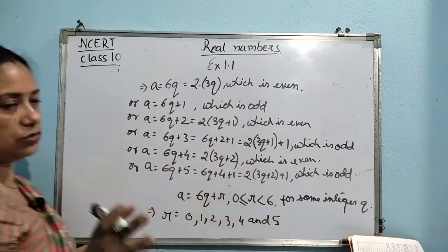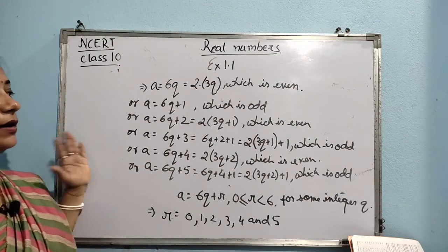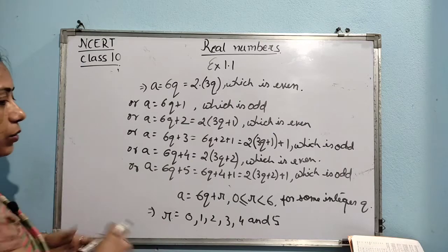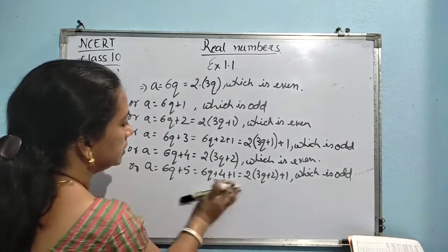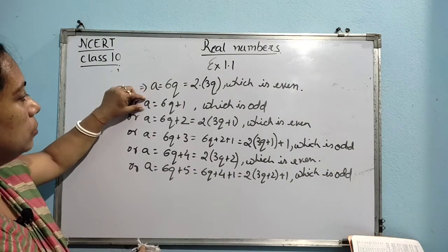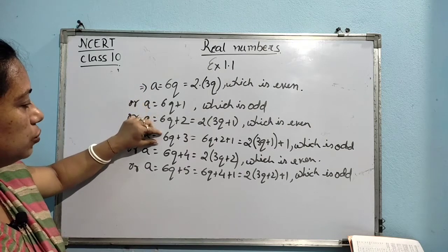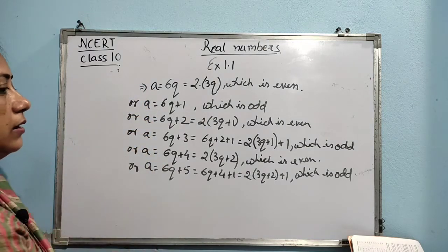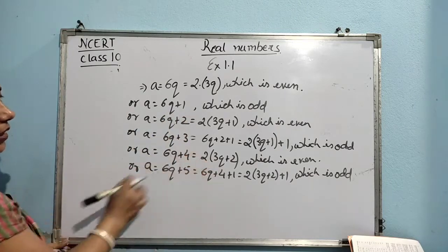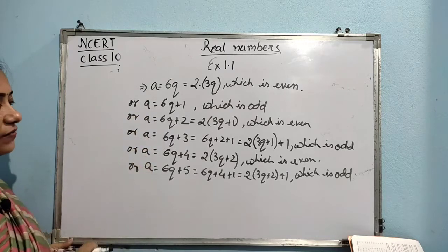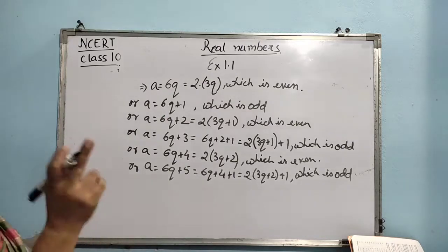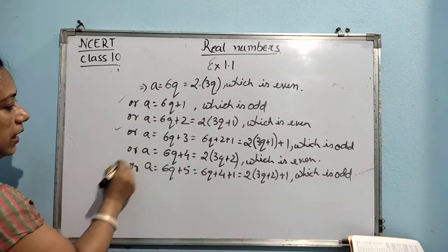Actually it is not needed to write all these steps while attempting the question in an exam — you can compress the steps and just write A is equal to 6Q, or 6Q plus 1, or 6Q plus 2, or this, or this. Here, just in order to explain how we are saying that each is even or odd, I am writing all the steps. So all six values of A have been written. Since we have taken A to be odd, the values we are going to accept are 6Q plus 1, 6Q plus 3, and 6Q plus 5.